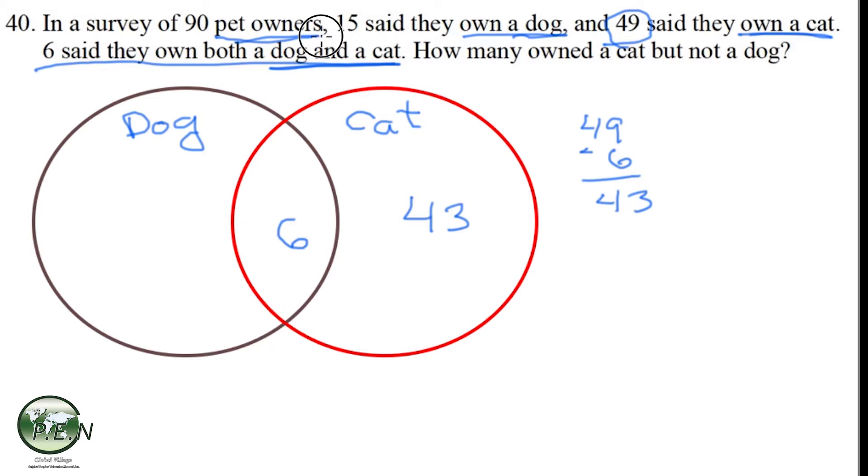So now we're at the dog owners, and we know that there's 15 of them. And it's not 15 that goes in this region. It's 15 total in the black circle. So we have to take our 15, subtract off the six we've already counted right here in the middle. And so that's going to leave us with 9.